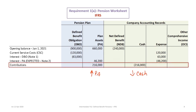The next item is the contributions — quite easy. We add $216,000 contributions into the plan assets; that gets paid to the trustee and comes out of cash. So we have a debit to the memorandum account for plan assets for $216,000 and a credit to cash, which increases the plan asset and decreases cash.